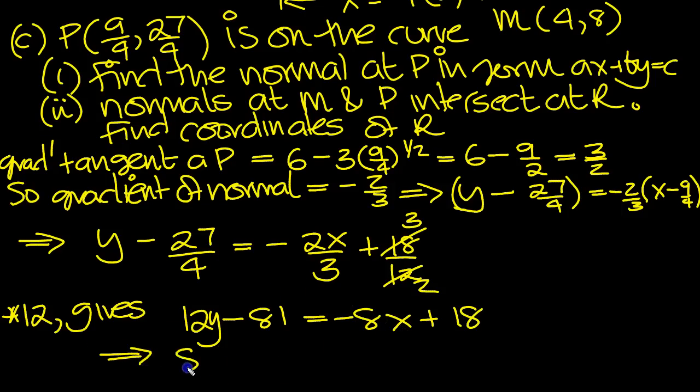So that tells us then that, move the minus 8x over to plus 8x, plus 12y, we need it in the form ax plus by equals c, move the 81 over to be with the 18 to make 99.